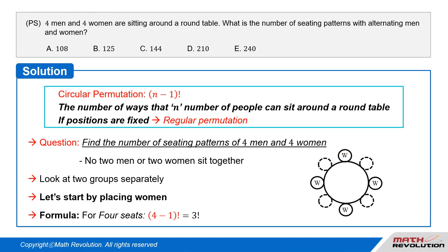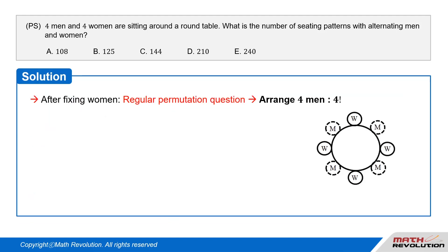In four seats, the number of possible arrangements is the factorial of 4 minus 1, which is equal to 3 factorial. Once we have fixed the women around the table, the problem becomes a regular permutation question.